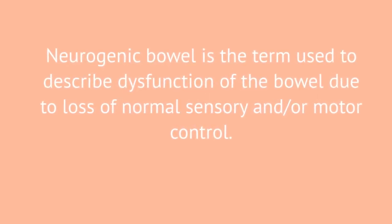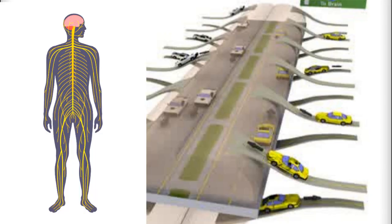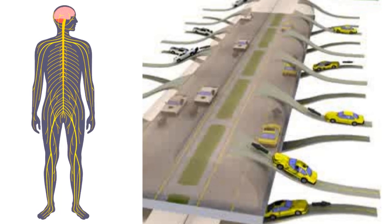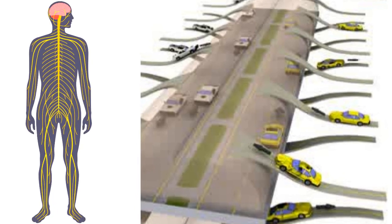Neurogenic bowel is the term used to describe dysfunction of the bowel due to loss of normal sensory and/or motor control. The spinal cord acts as an information highway for communication between the brain and the body. The brain receives sensory messages from the body, such as "my nose itches," which directs the body to scratch the nose.